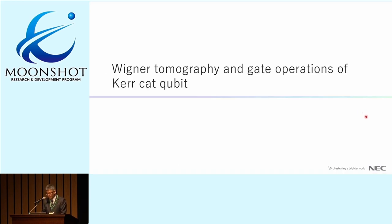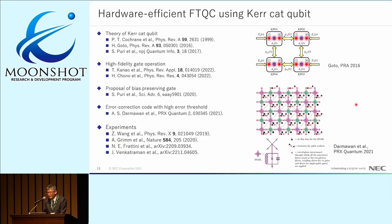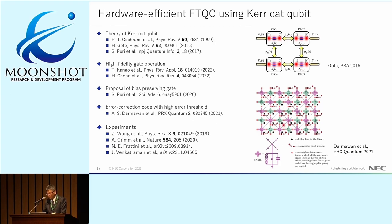The first detailed topic is Wigner tomography and gate operation of the cat qubit. The cat qubit is an attractive platform for fault-tolerant universal quantum computing. It is a Schrödinger cat state stabilized in a Kerr parametric oscillator. The cat state is known to have highly biased errors, so the phase-flip rate is much smaller than the bit-flip rate, leading to a higher error threshold than unbiased qubits such as transmons and hopefully reducing hardware overhead for quantum error correction.